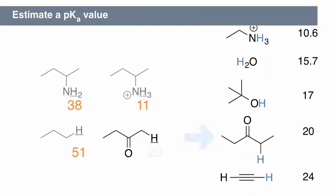The protons alpha to a ketone have a pKa value of approximately 20, even though they are alkyl protons. We go into the reasons why in a later video.